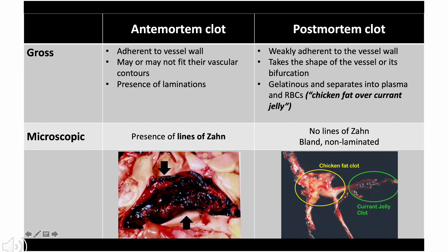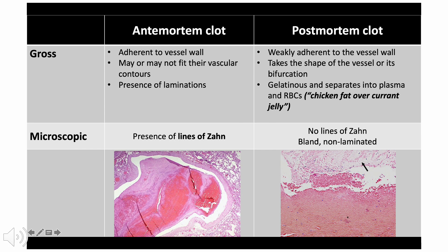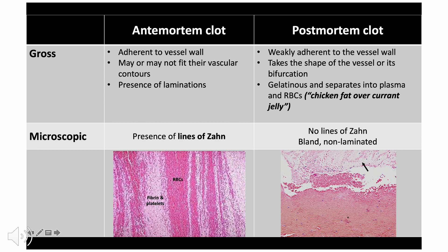Postmortem clots characteristically have a gelatinous appearance with a yellow upper portion and dark red dependent portion, described as 'chicken fat over currant jelly,' due to gravitational separation of red blood cells settling at the bottom from plasma at the top. Microscopically, antemortem clots have laminations or 'lines of Zahn,' signifying thrombus formation during active blood flow - alternating pale areas of fibrin and platelets with darker areas of red blood cells. Postmortem clots have no lines of Zahn and are bland and non-laminated.